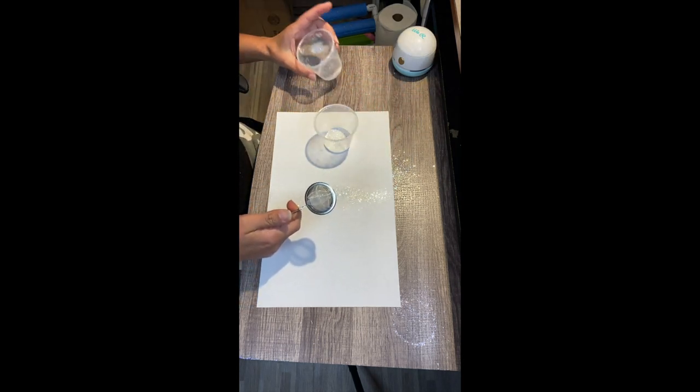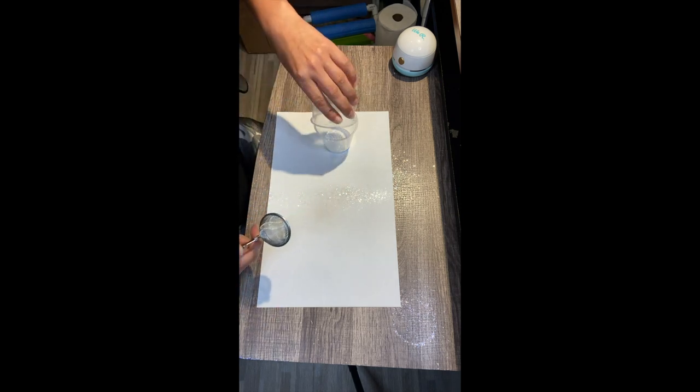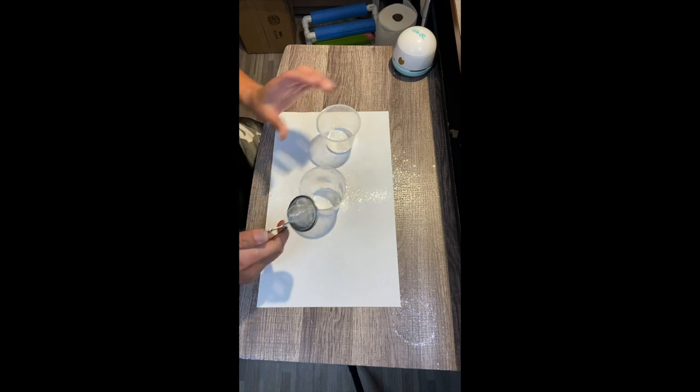So I found this tea strainer, and all you have to do is, once you are completed with glittering your tumbler, just place everything that lands on your paper or whatever it is that you have to catch your glitter.